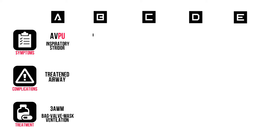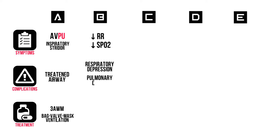In B: severe bradypnea. If severe enough, oxygen saturation will start to fall. Lung sounds are usually normal, but severe opiate overdose is associated with pulmonary edema. Beware that these patients have an increased risk for aspiration due to their reduced level of consciousness. Monitor respiration closely, and start bagging if needed.